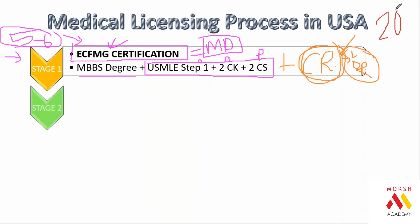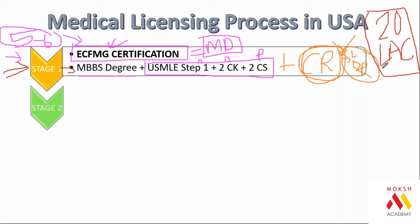In stage one you work hard to build your profile, and in the overall process you spend around 20 lakh Indian rupees as an investment. This is not spent all at once — it is spread over five to six years and includes exam fees for Step 1, Step 2 CK and CS, traveling to America for the CS practical exam, rotations, and your application costs.